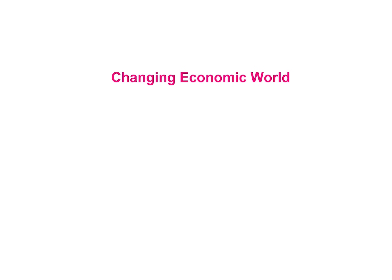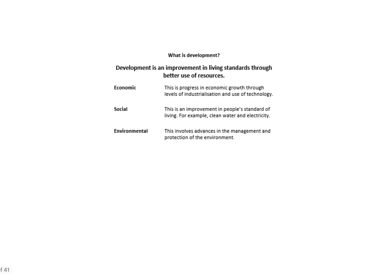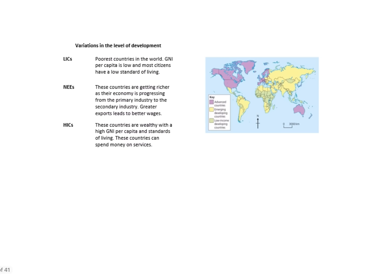Section two of the paper is all about the economic world, which has lots of terminology. The first important concept is development — improving living standards through better access to resources. Development can happen on three branches: economic, social, or environmental. There are variations in level of development around the world, and we group countries into three brackets: LICs, NEEs and HICs. Definitions of each are included on the front cover of the paper.